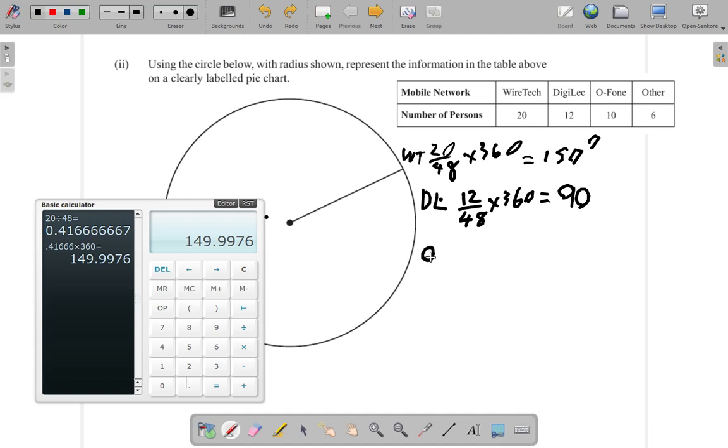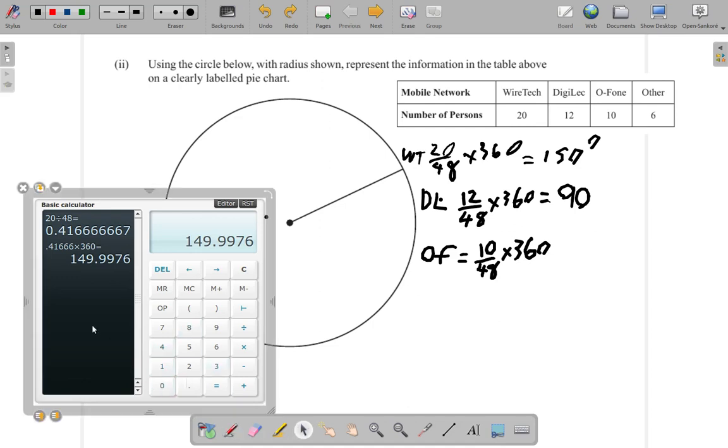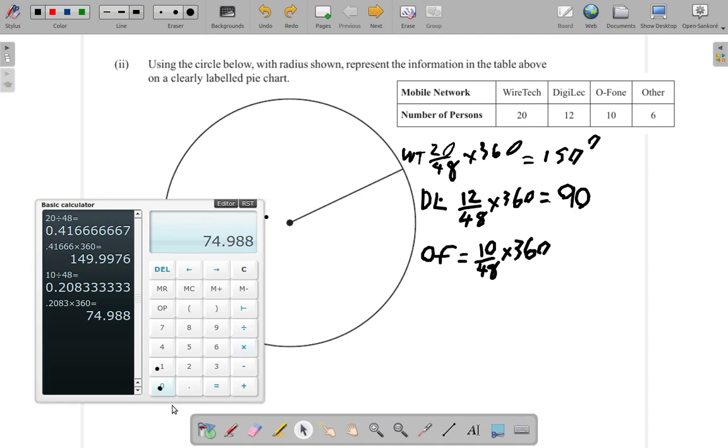Then we have O-phone. That would be 10 over 48 times 360. So 10 over 48 is 0.2083, and times 360 degrees gives us 75 degrees for the O-phone.